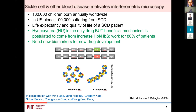Roughly about 200,000 children born every year have sickle cell disease, and in the US alone there are about 100,000 people suffering from this disease. Today, the life expectancy and quality of life for sickle cell patients is still roughly a decade shorter than people without this condition, and there are very few drugs that can treat this disease. Hydroxyurea is one of them — the oldest one — but it only works for about 80% of patients.